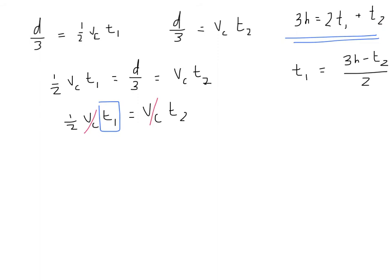Okay, so now that I have this, I'm going to use it to plug in right here. Alright, so let's do that. When I plug in for T_1, I get one half times (3 hours minus T_2) over 2 equals T_2.